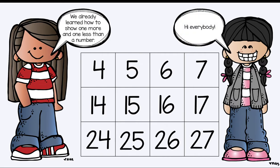We already learned how to show one more and one less than a number. So say if our number was the number 5. Remember if we are showing one more we need to go this way to the number 6. If we have the number 5 and we're trying to show one less we need to go this way on our hundred chart. And the answer would be 4.